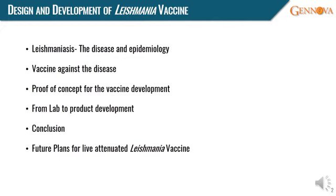I have divided my talk into six small segments for the sake of clarity: the disease and its epidemiology; current vaccine landscape against Leishmaniasis; our efforts towards development of a live attenuated vaccine as a proof of concept; product development from a proof of concept stage; summary of the work accomplished to date; and future plans with the live attenuated vaccine.